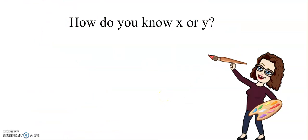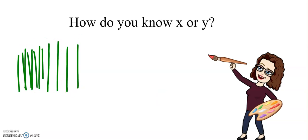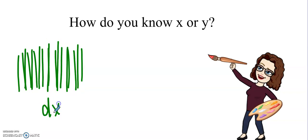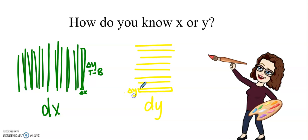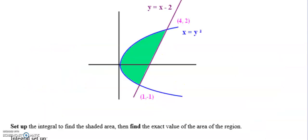How do you decide whether to use dx or dy? If you're painting up and down — top minus bottom — it makes sense to go with respect to x. If it makes more sense to paint horizontally, go with dy. For dx, each rectangle has an infinitesimally small width delta x and height equal to top minus bottom. For dy, the infinitesimally small width is delta y and the height is delta x, which equals right minus left. We're just summing up infinite rectangles either way.